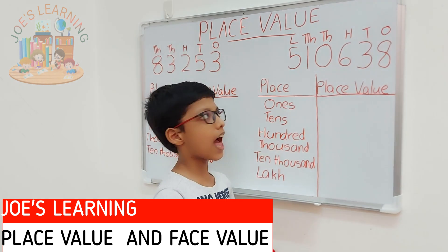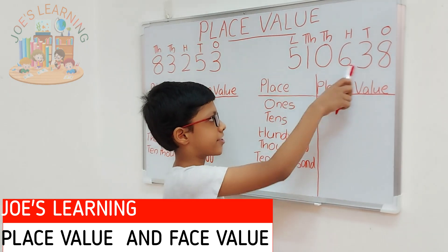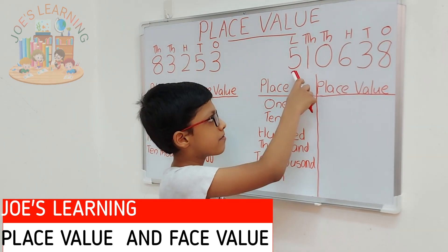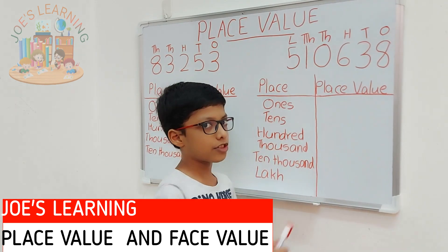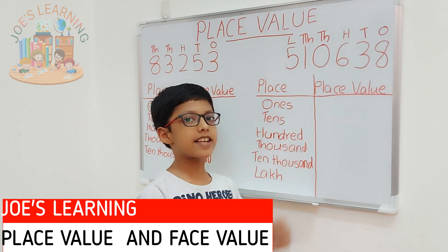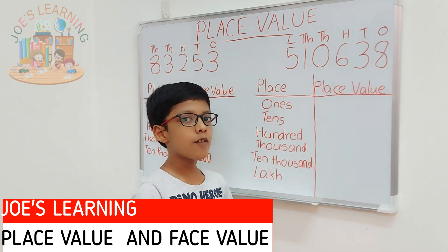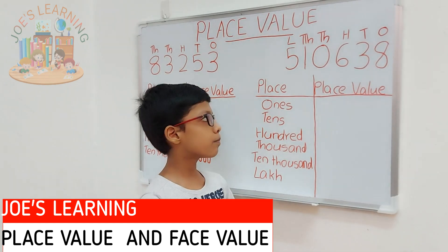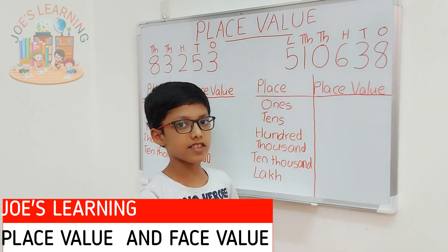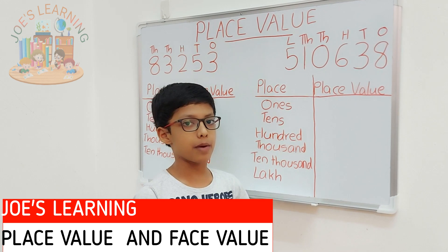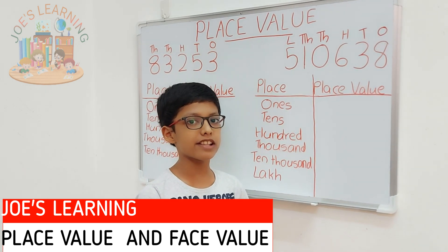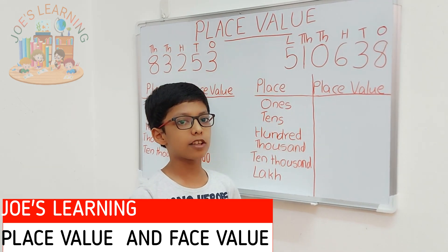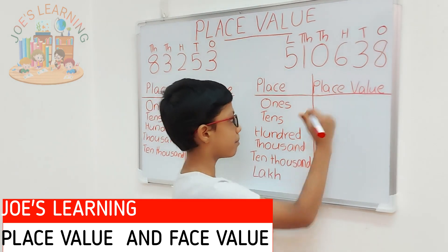Now, let's take a look at this example, that is 5,10,638. In this example, first let's take a look at the ones place. 8 is in the ones place. So, 8 multiplied by 1 equals 8. So, 8's place value is 8 in this number.